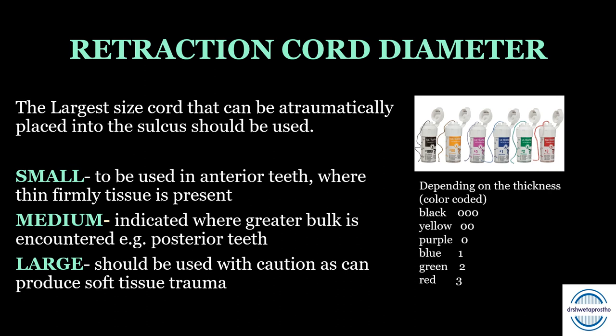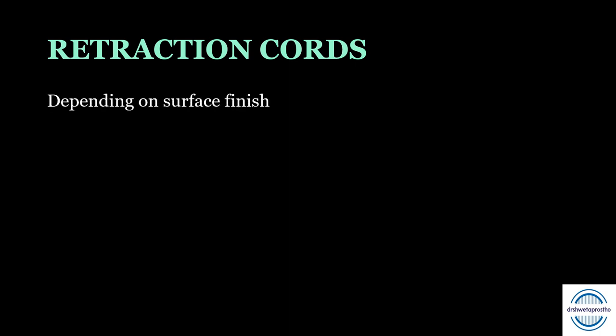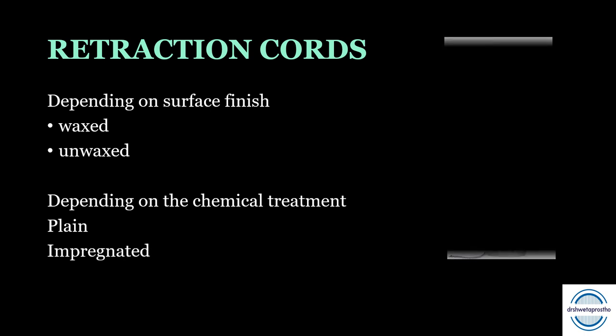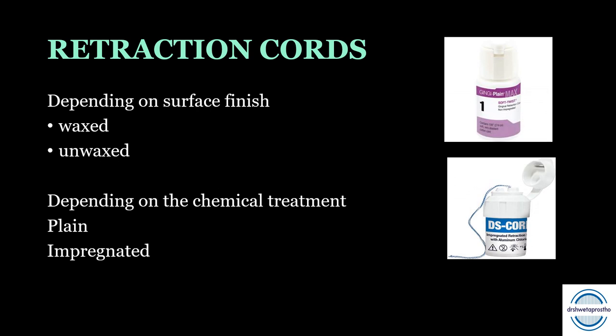Depending on thickness, cords are color-coded: black (triple zero), yellow (double zero), purple (zero), blue (one), green (two), red (three) — in increasing order of thickness. Cords can also be waxed or unwaxed — waxed cords have a wax coating making them smooth. They can be plain or impregnated; impregnated means chemically treated, which gives the advantage of fluid control. All these classifications can be included in a short note on retraction cords.